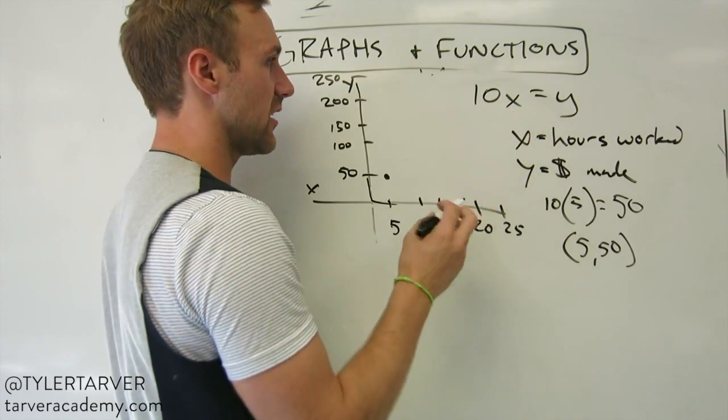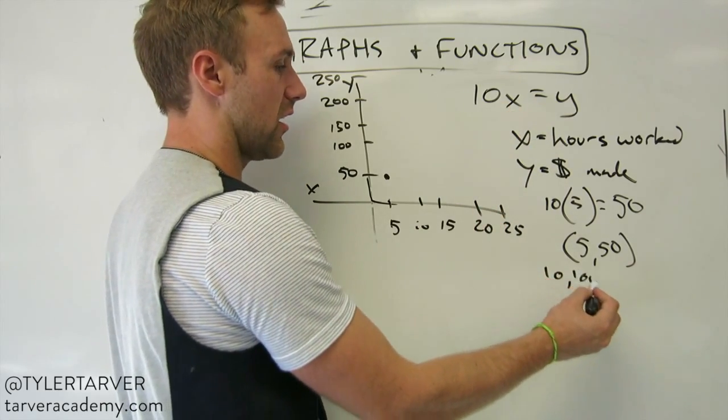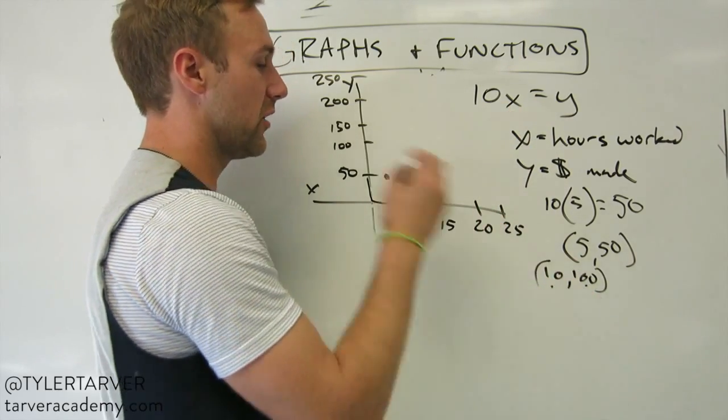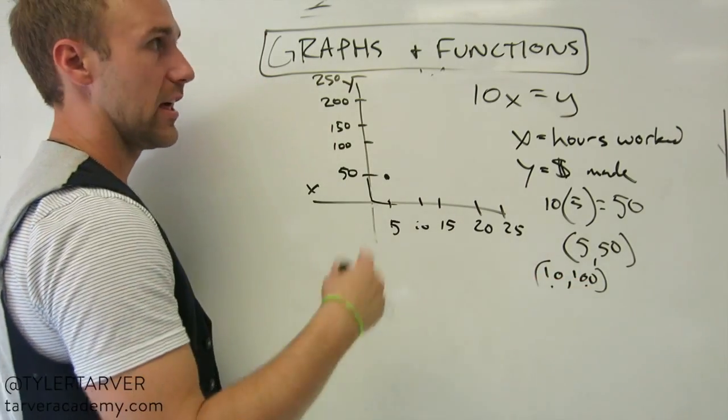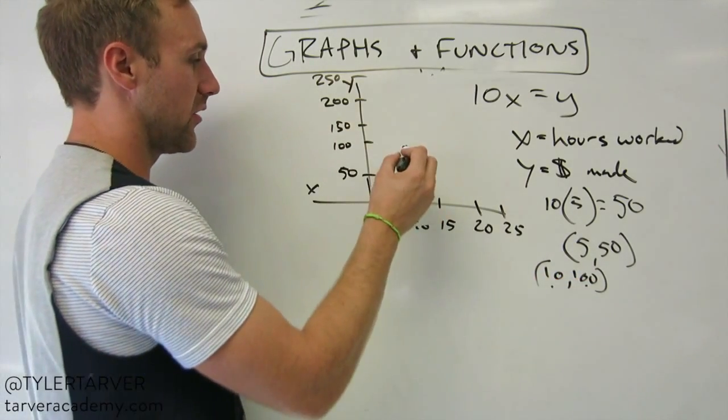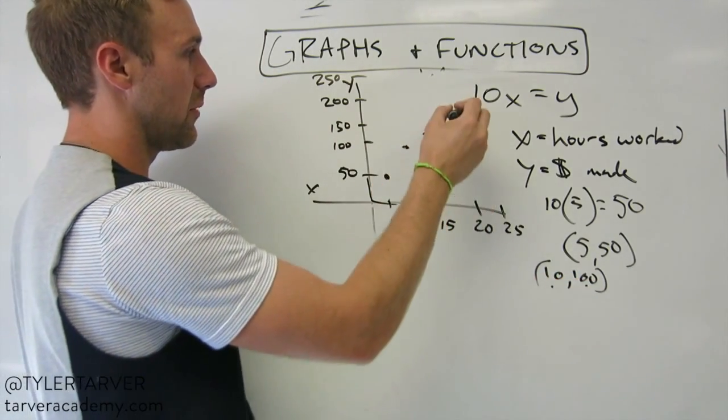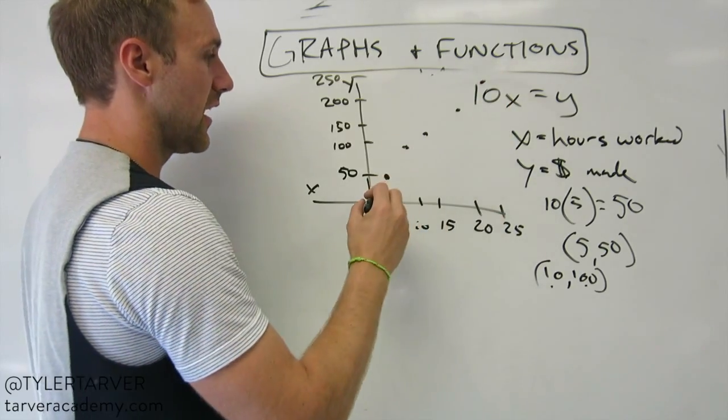Same thing for 10. Put 10 in there. 10 times 10 is 100. So 10 and 100. Input, output, X, Y, every other name I can think of. 10, 100. And as you can guess, it keeps going up as we put those in. And then we get a line.